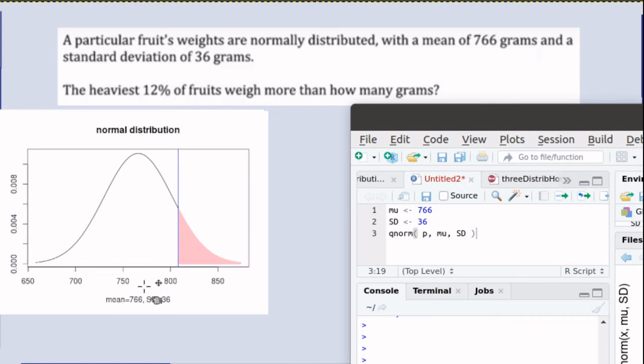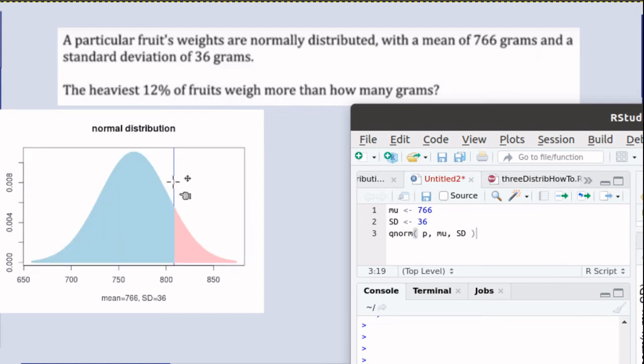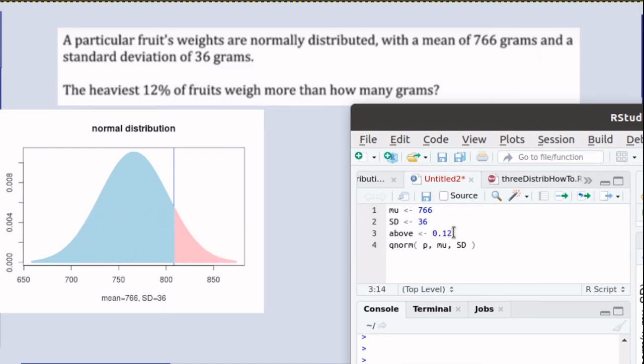Our problem in this problem is that we know the area above, not the area below. So what we need to give R is this blue area, but we know that this pink area is 12%, so we could tell R what the area above is and then ask R to find out what the area below is.